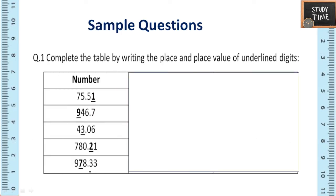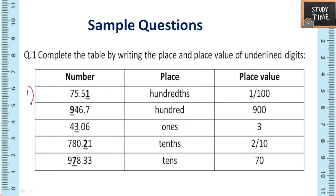Next we will see sample question answers from this chapter that you can expect for your exam. First question: complete the table by writing the place and place value of underlined digits. So here 1, 2, 3, 4, 5 numbers are given. See here, first question it is hundredths place. Already I told you this is tenths place, this is hundredths place. So 1 is hundredths place, the place value of it is 1 by 100. Second one, so it is 1 tens and hundreds, so 9 is hundreds.